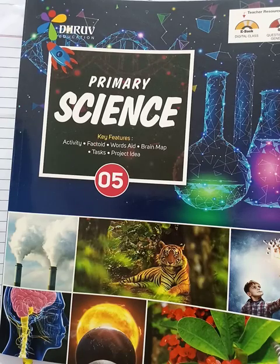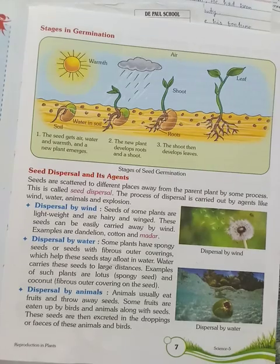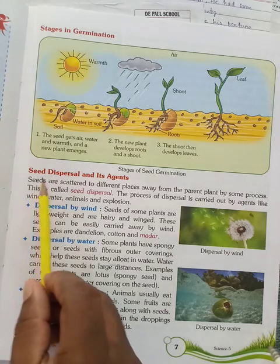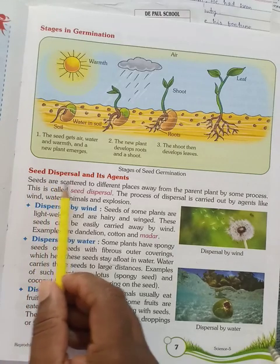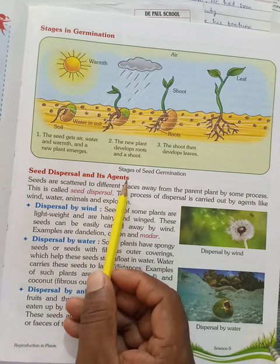Welcome to online classes. This is class 5, Primary Science. Dear children, now you open on page 7. Today we are going to discuss seed dispersal and its agents.